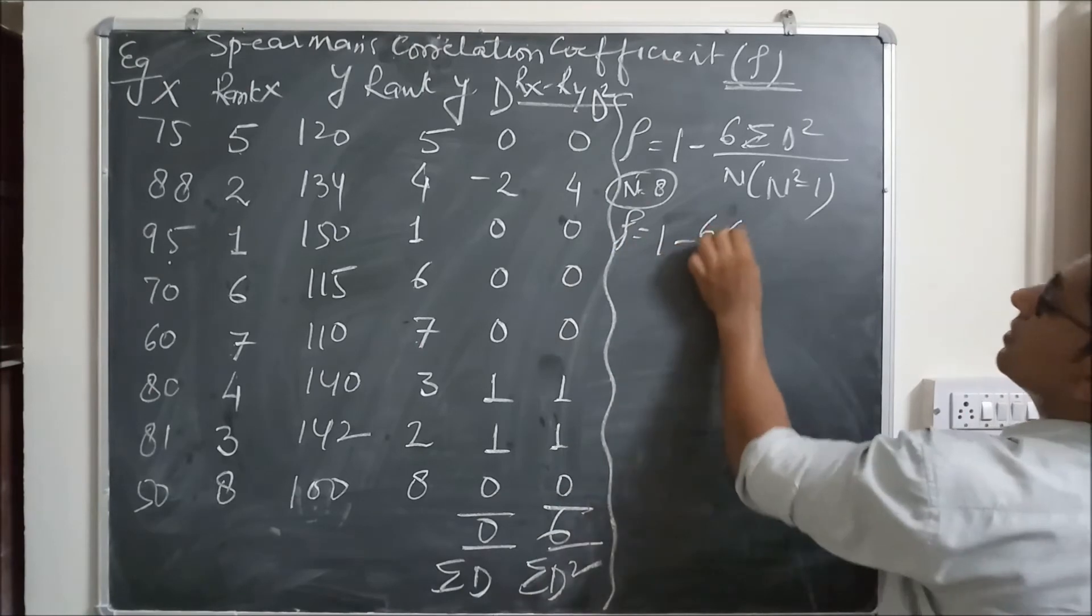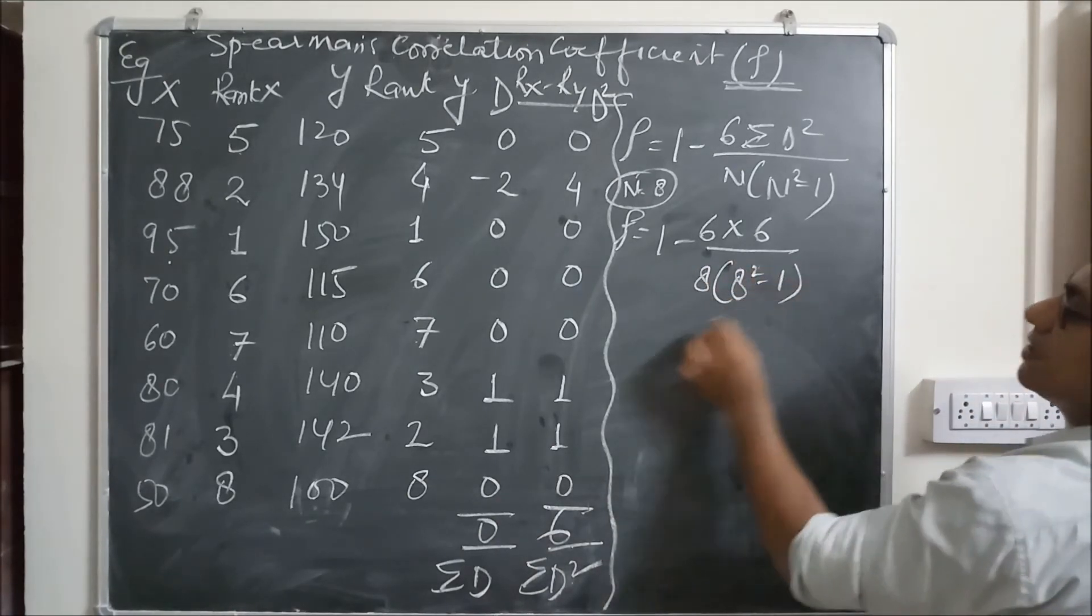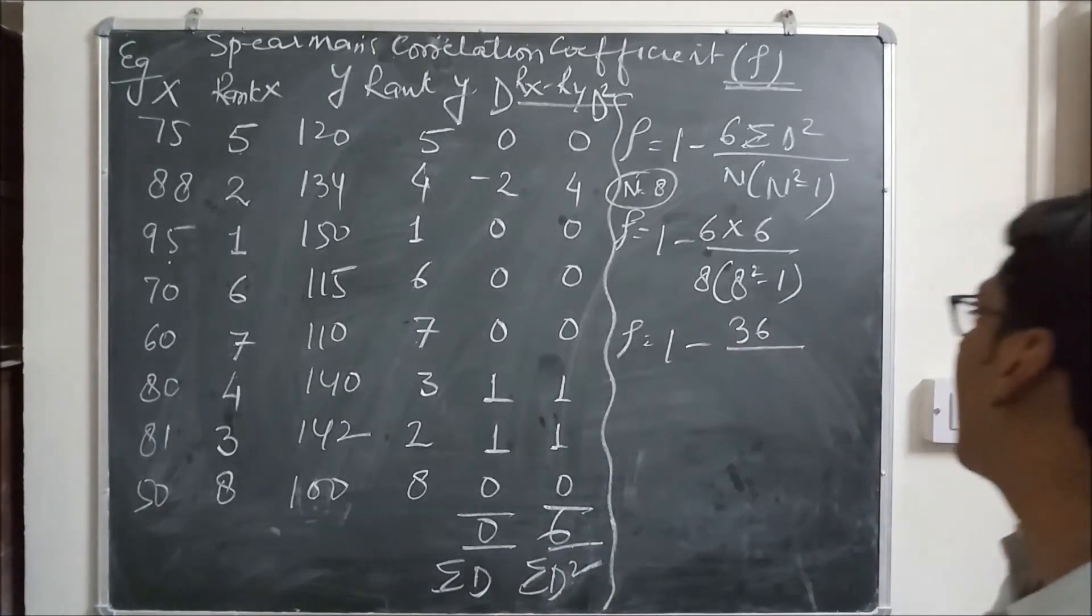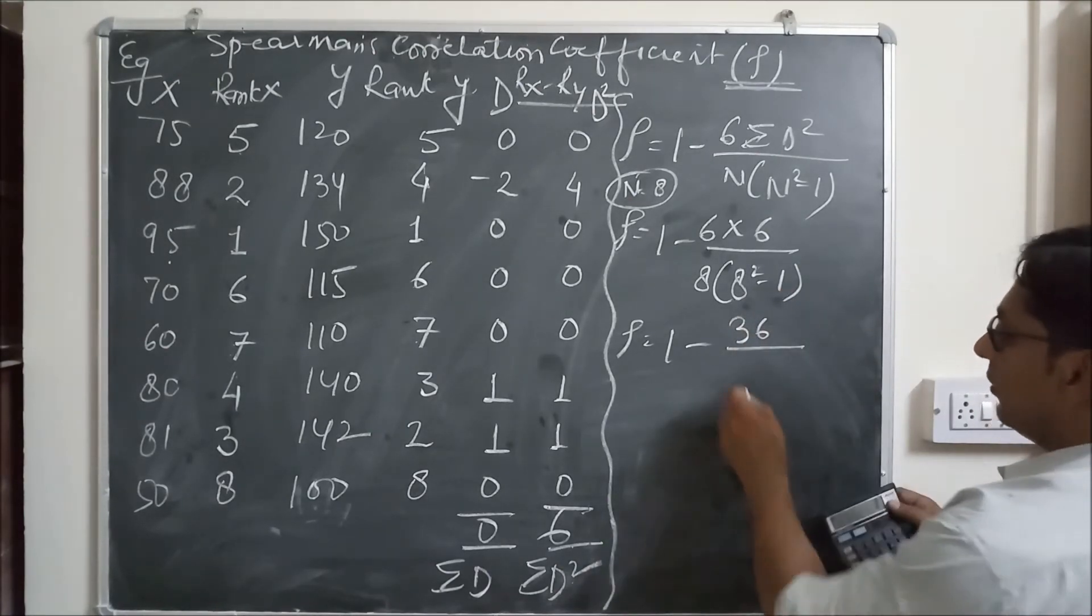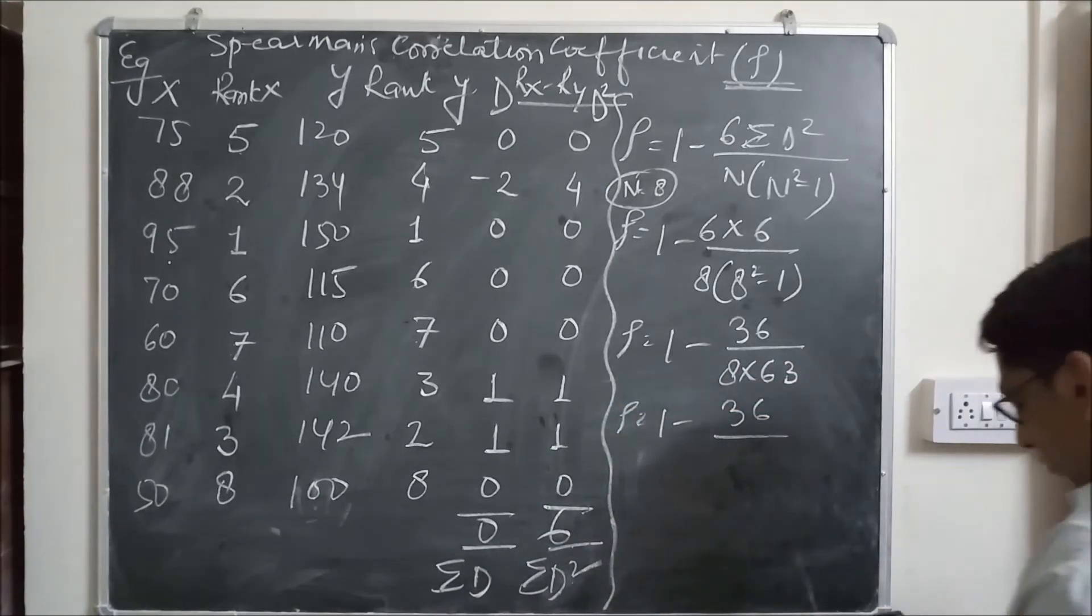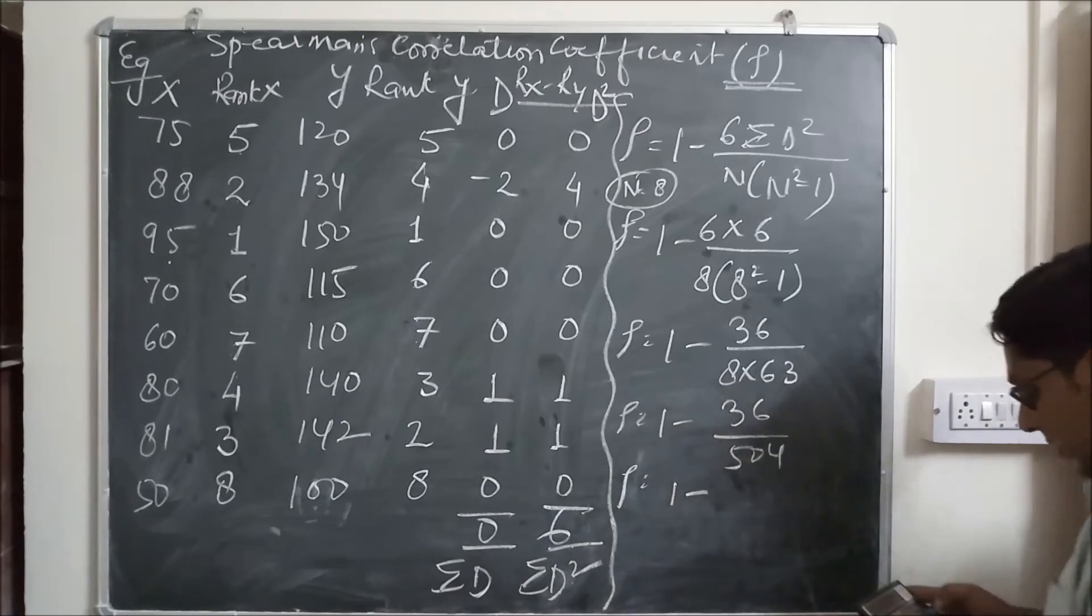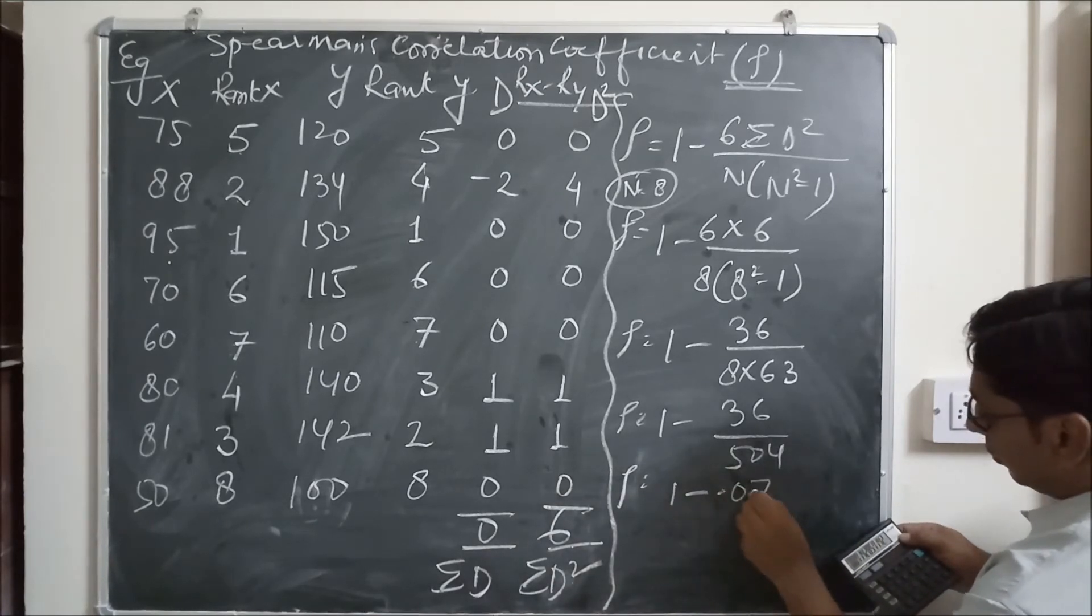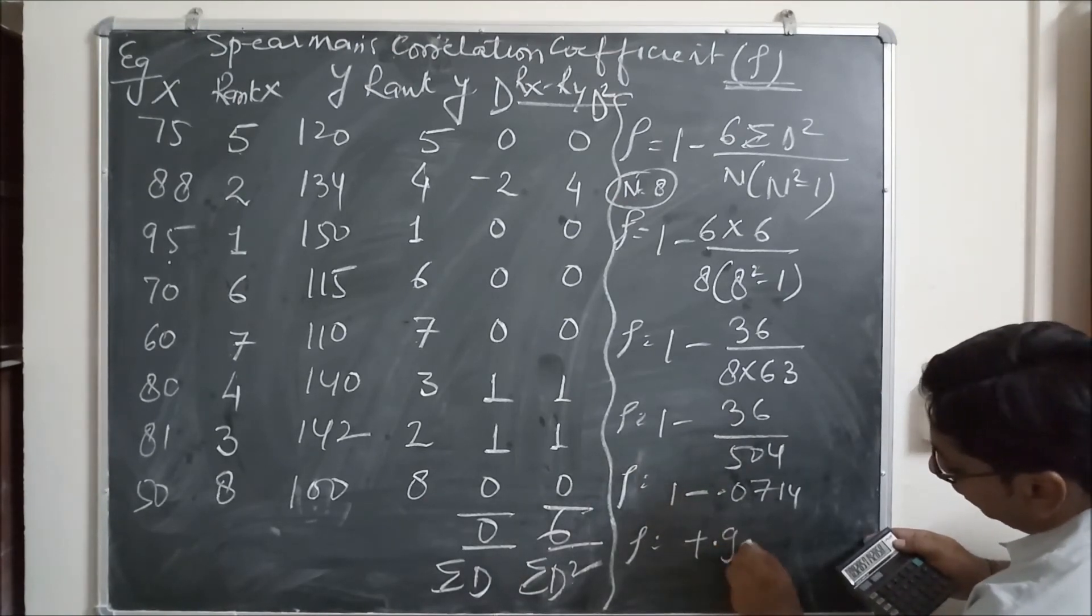Rho equals to 1 minus 6 sigma D square. Sigma D square is 6 upon 8, 8 square minus 1. 1 minus 36 upon 8 square is 64, 64 minus 1 is 63. 1 minus 36 upon 8 into 63.